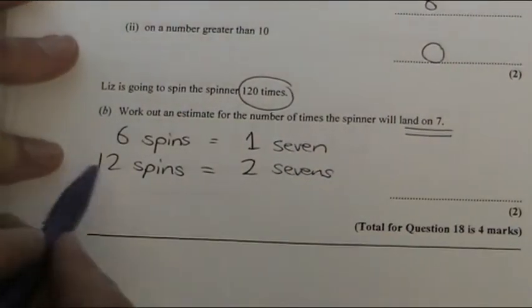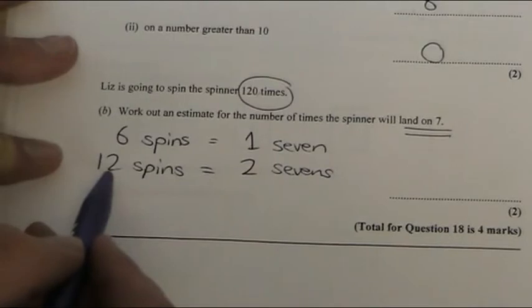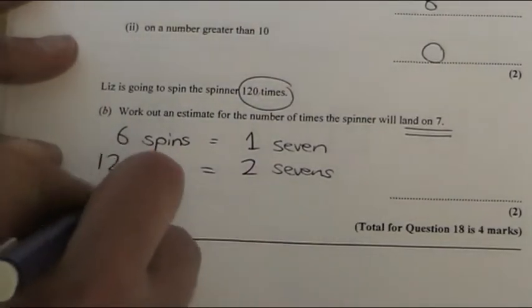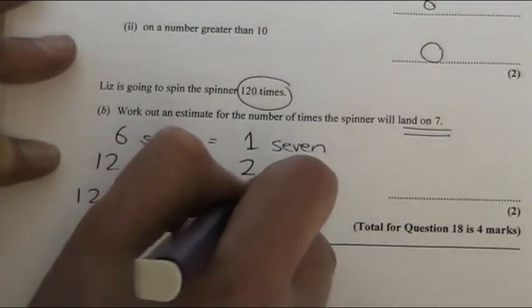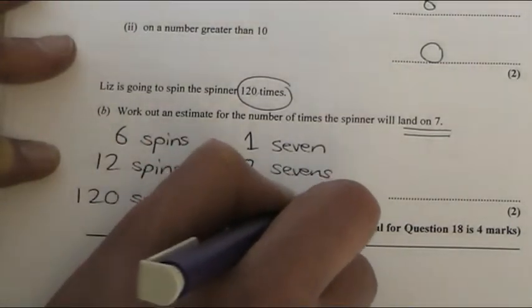Now, I can see the link here. I'm going to times this by 10, because 12 times 10 is 120. So if I times it by 10, I would get 120 spins, and that means I would get 20 sevens.